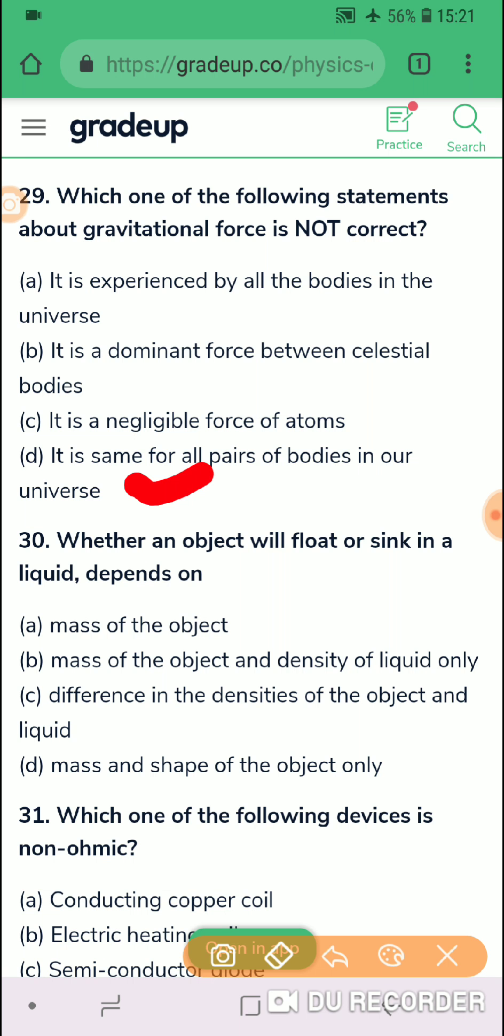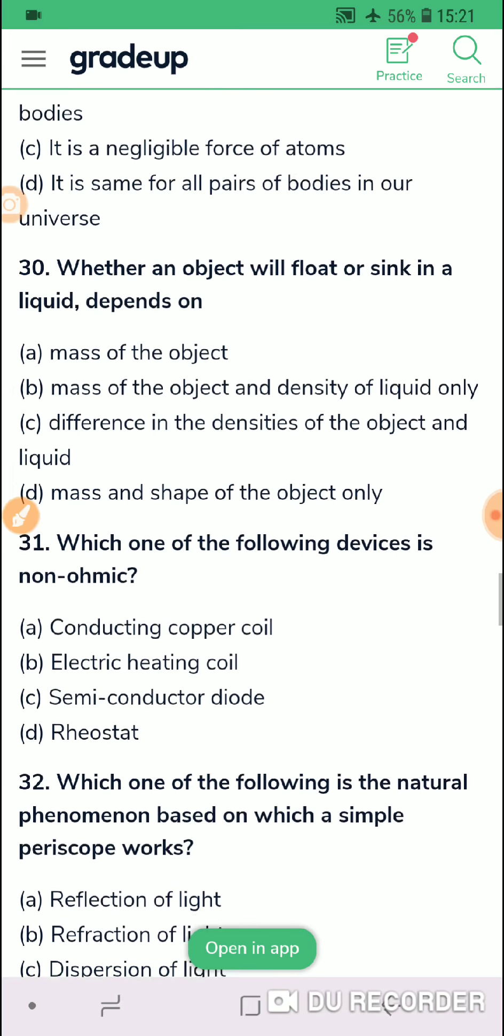Let us check the other question 30. Whether an object will float or sink in a liquid will depend upon, so it depends upon their densities basically. So option C in my opinion is correct, difference in the densities of the two objects, between the object and the liquid. That will be the correct option, it does not depend upon mass.